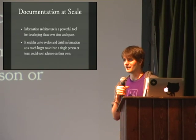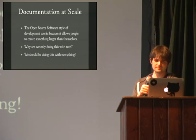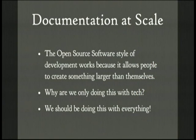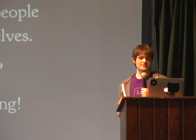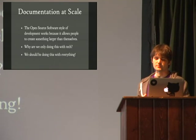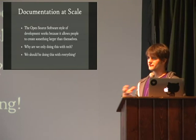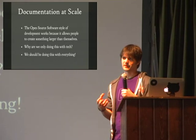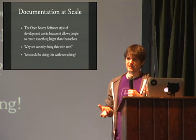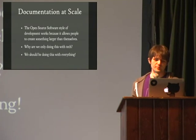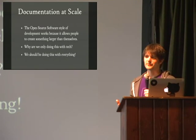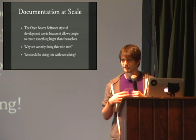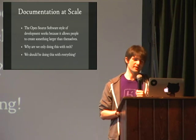Documentation enables us to evolve and distill information at a much larger scale than a single person or team could ever achieve on their own. This is extremely helpful when you have distributed people all over the world. Because of the way open source software works, this allows people to work on something much larger than themselves — thousands of people all over the world, from random cultures and time zones, all contributing to projects for different motivations, and it all comes together and just works. But why are we only doing this with technology and code? Why can't we do this with ideas, prose, language?